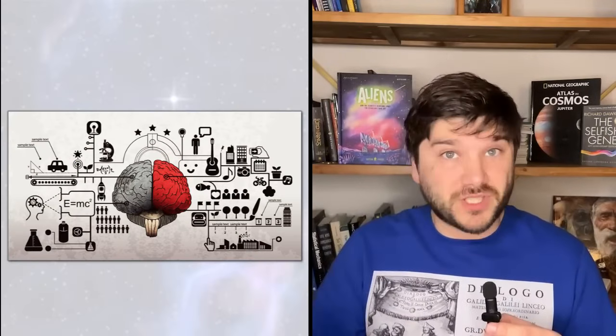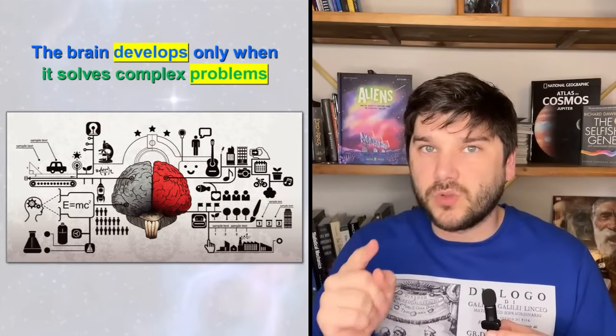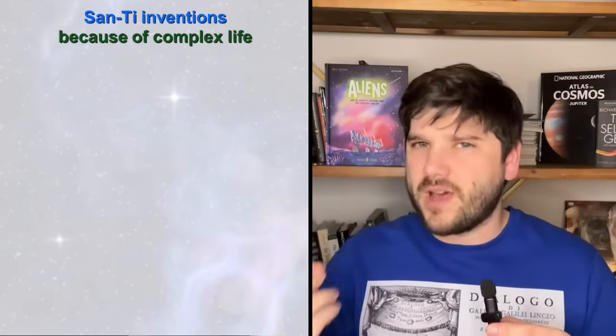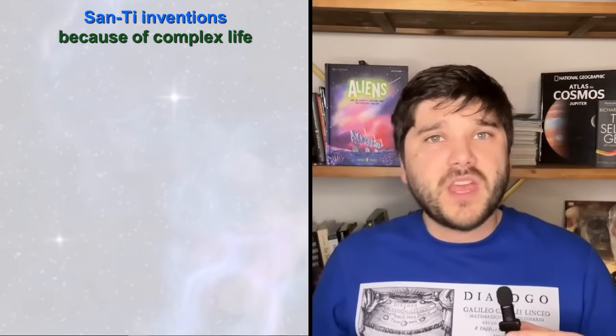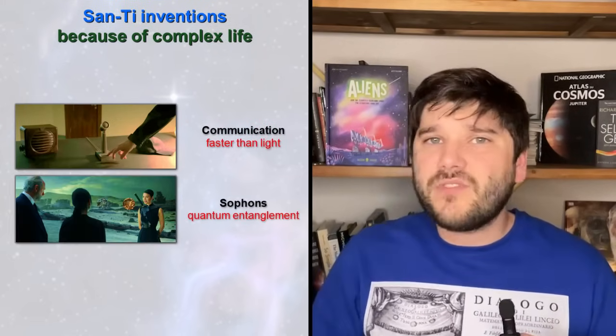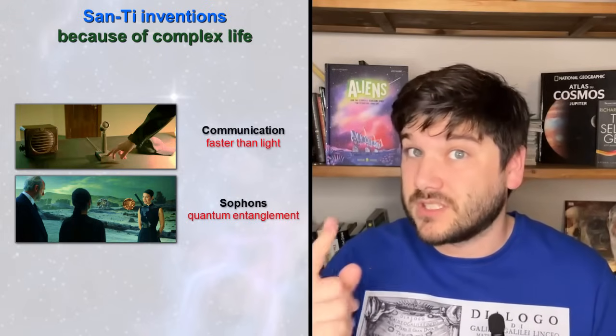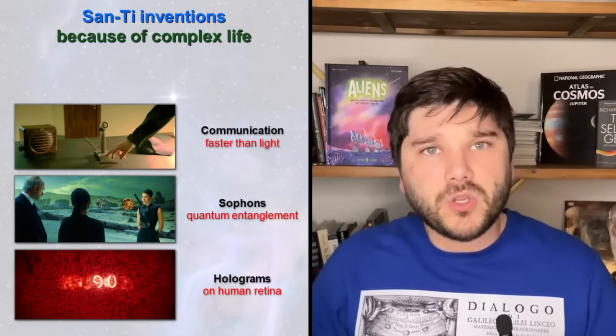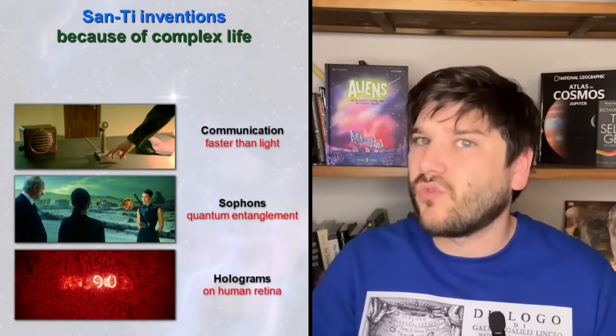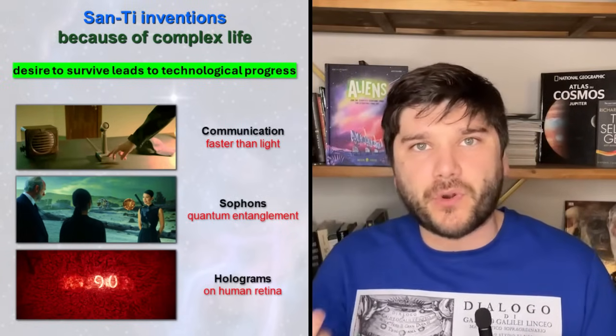I think we all can take a page from San-Ti's book. The brain develops only when it must solve complex problems. San-Ti's entire existence around three stars is a very complex problem. So no wonder they developed the communication methods faster than speed of light. Then they developed sophons based on quantum entanglement to spy on people using higher dimensions they unfold. They created holograms on human's retina. They used all means necessary to simply survive. And their desire to live made them achieve outstanding technological progress.